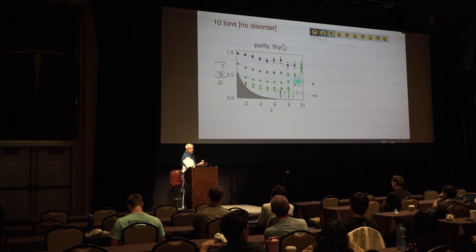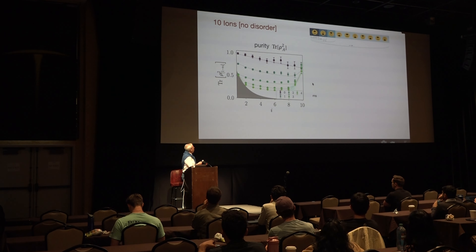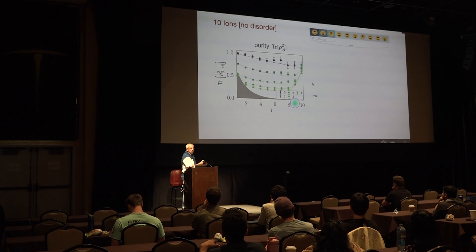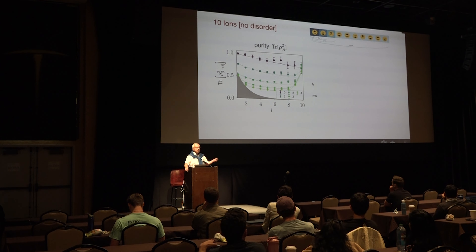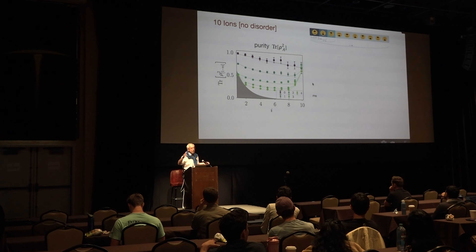So if we had longer time evolution, though, we would expect more decoherence for the subsystem size of 10. There's a little bit of change here, but it's a very minor change — things are getting slightly worse. The measurement error was the dominant part of this particular experiment.